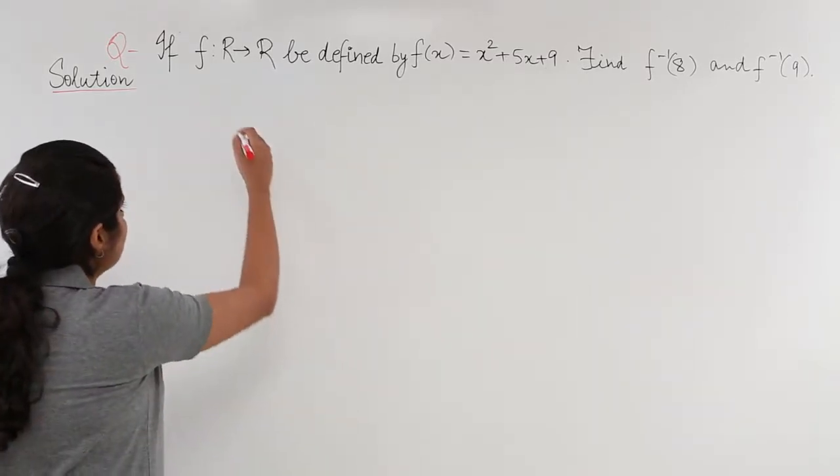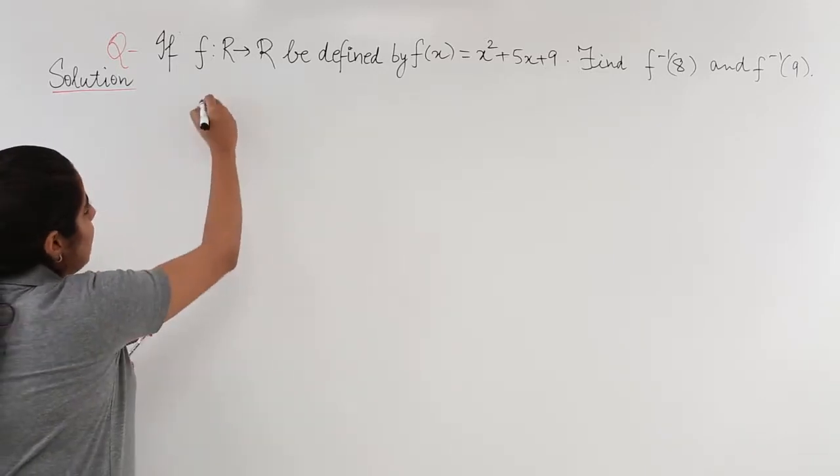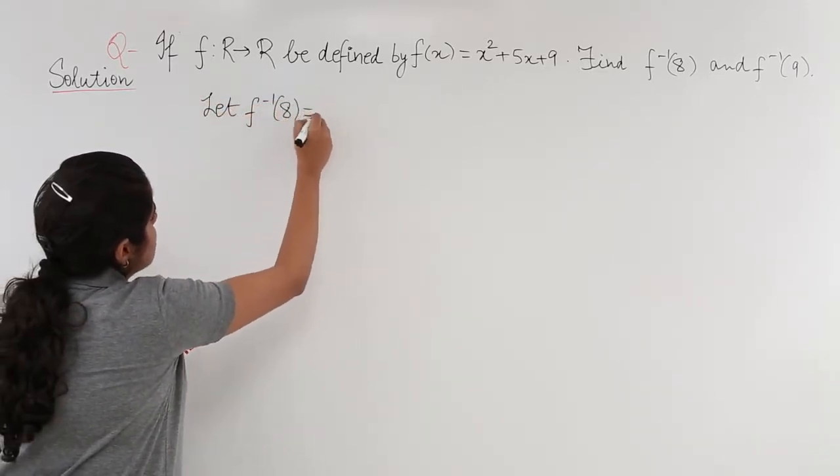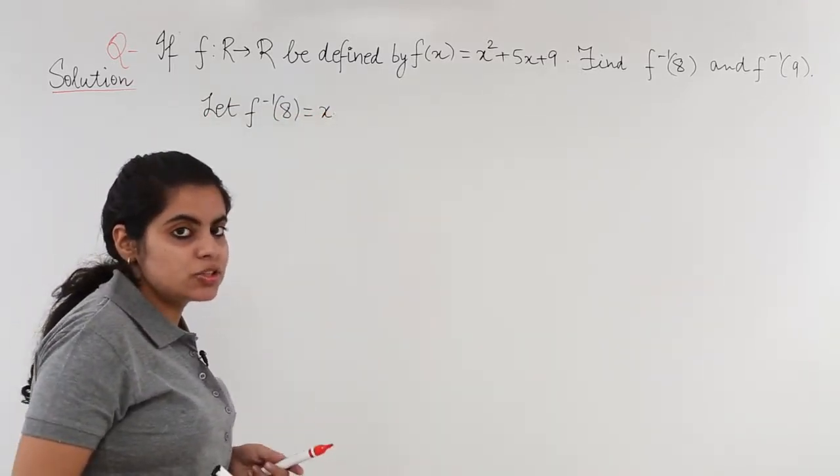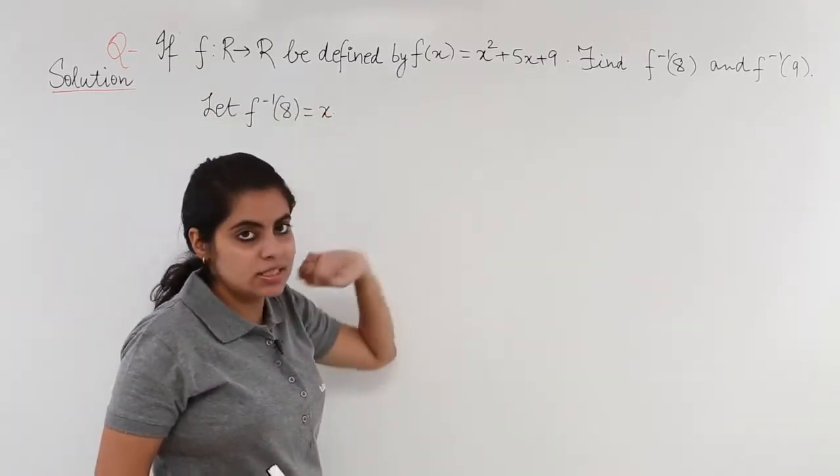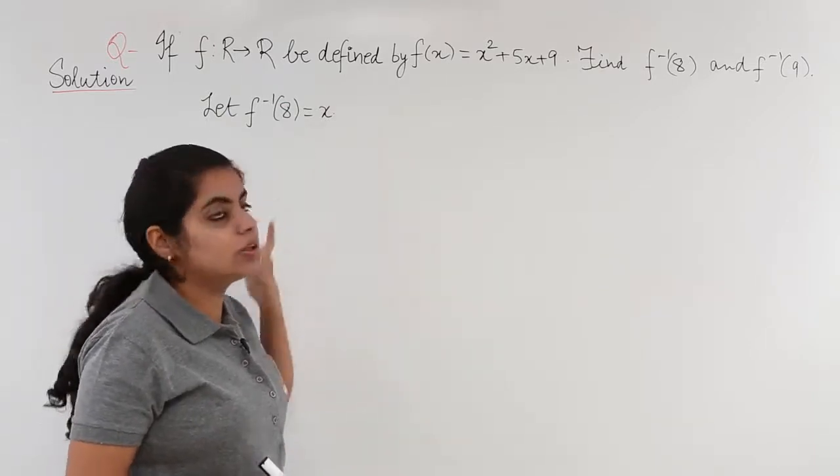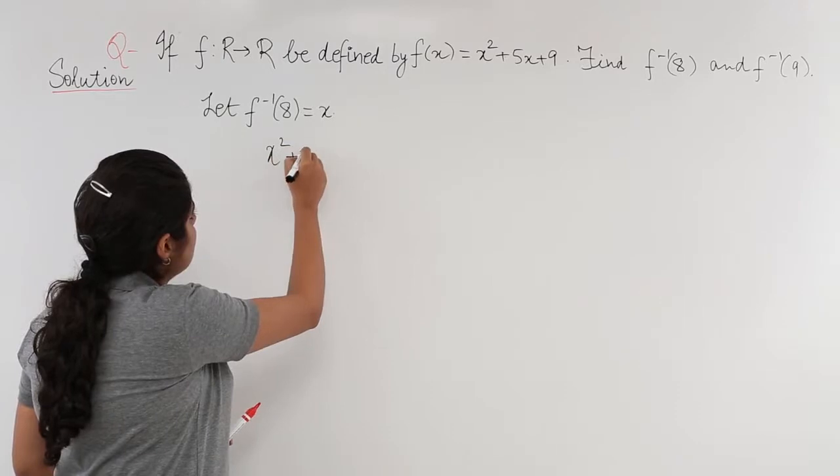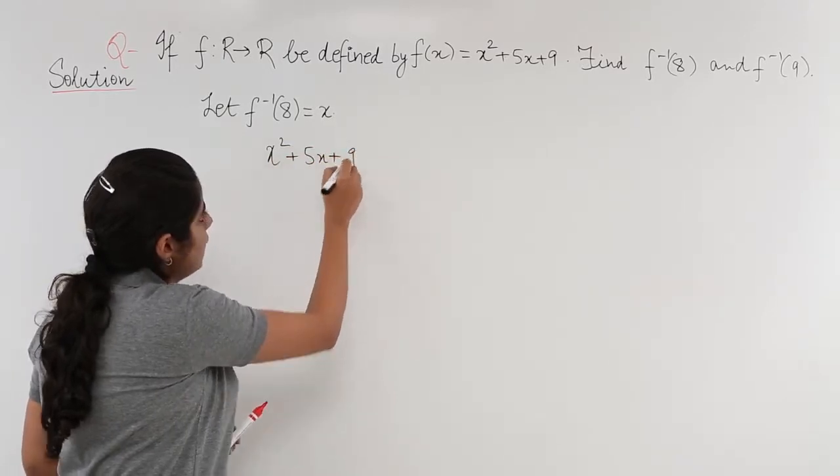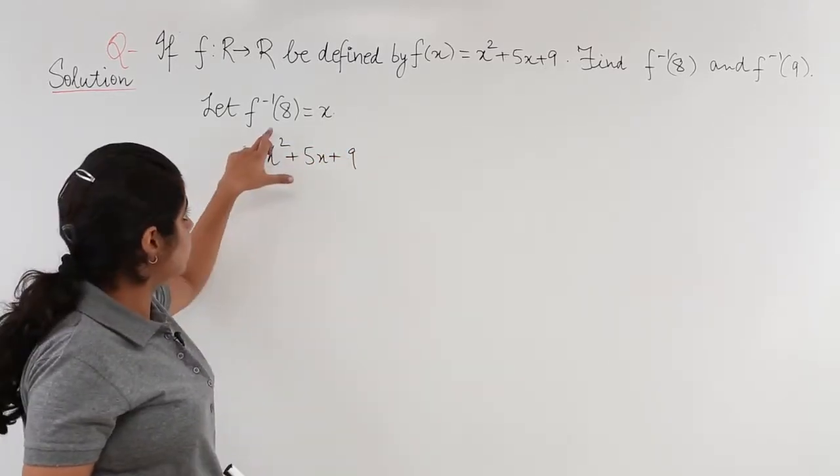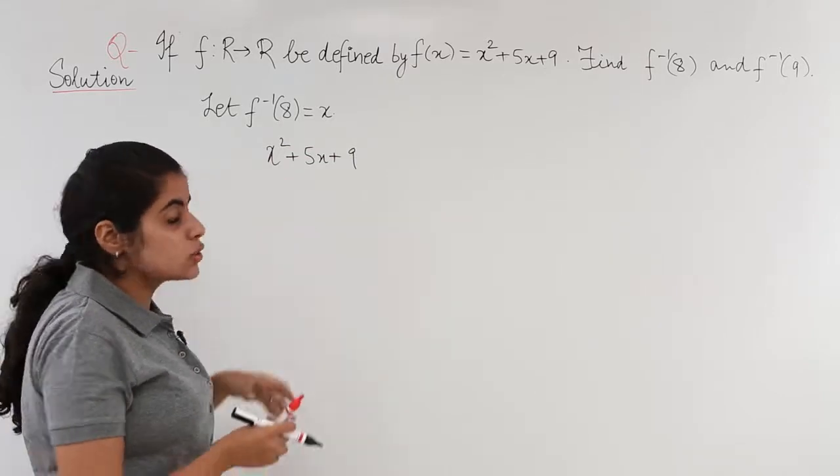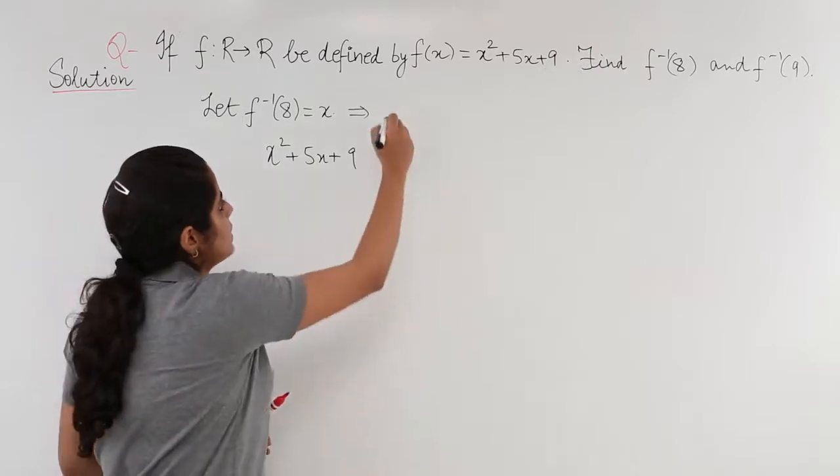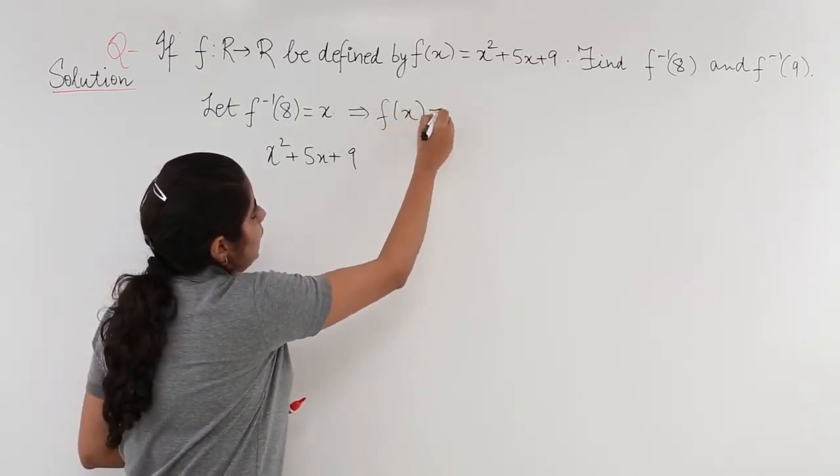So how do we go about it? We just write that let f⁻¹(8) is equal to x because the question is in x. So we need to assume it equal to x. Now we have been given x² + 5x + 9 is my f(x). So if I manipulate this step, f⁻¹(8) = x means f(x) = 8.